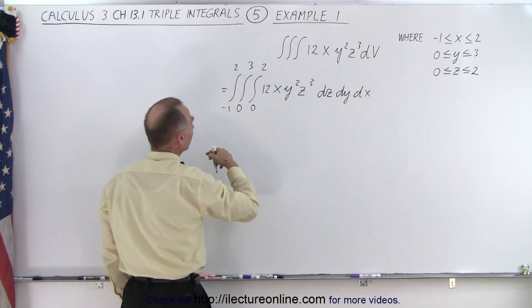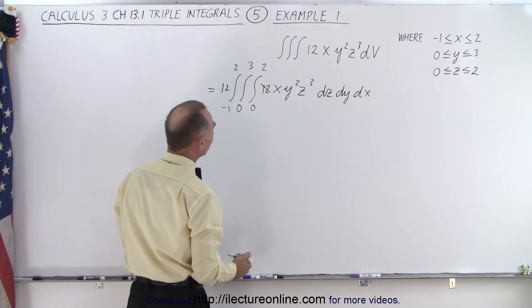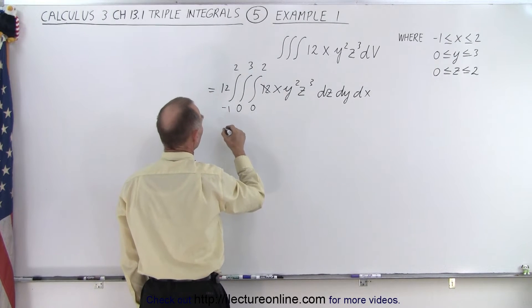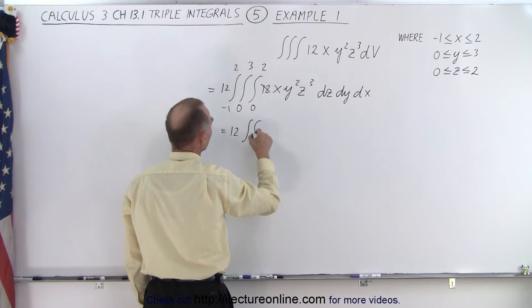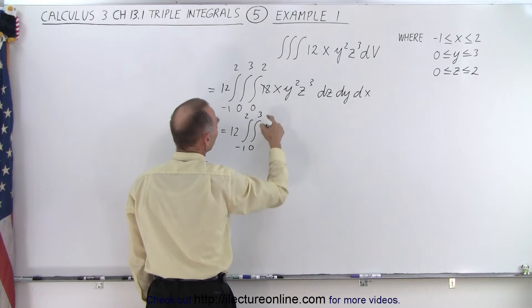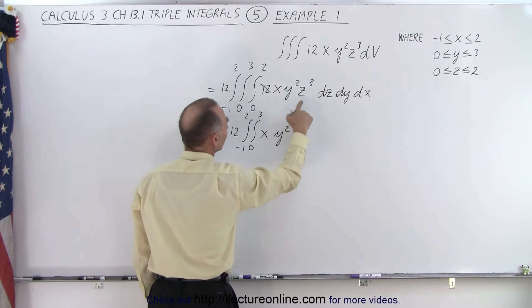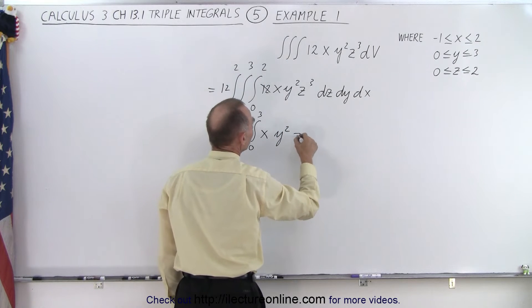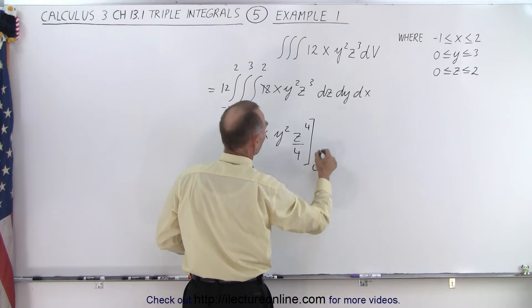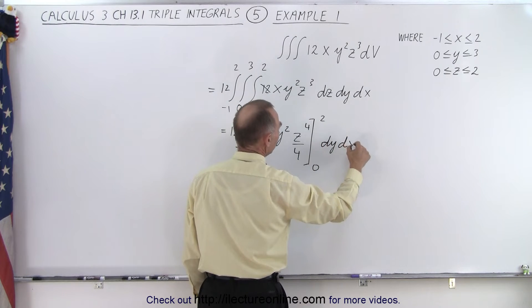And the 12 can come out so let's go ahead and do that. So we'll go ahead and put the 12 and get rid of that. And the first thing we do is we're going to integrate over z, that means x and y remain constant. So this becomes equal to 12 times the double integral from -1 to 2 and from 0 to 3, and we end up with xy². And z³ becomes z⁴ over 4, and then we're going to evaluate that from 0 to 2, and then we still have our dy dx.